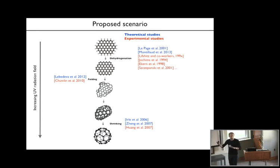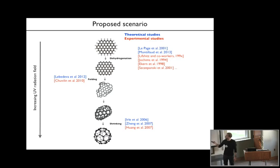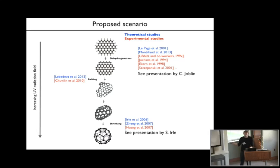None of this is really new. The dehydrogenation of PAHs has been studied theoretically and experimentally since the 1990s. The folding has been studied in the lab and theoretically—these studies were boosted by research on graphene, where people were studying how these flakes would be stable. There is interesting work about the folding of graphene flakes. On the shrinking part, Stefan Ehrl will have more about this, and Christine I think will also talk about the dehydrogenation in our presentation.